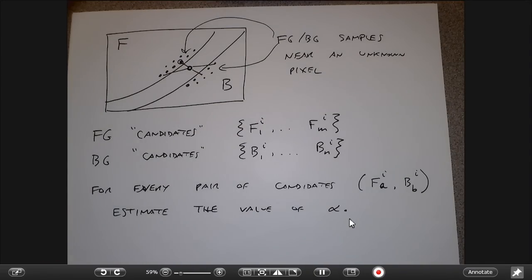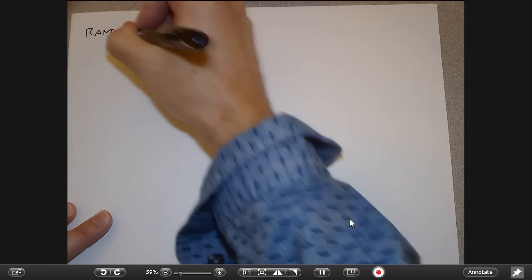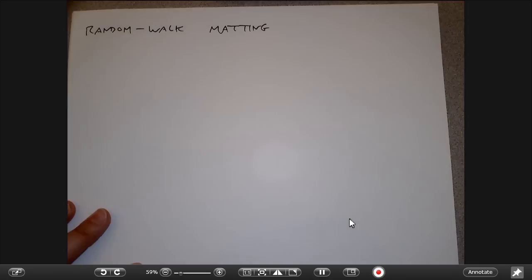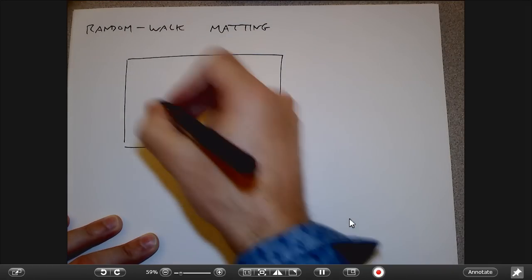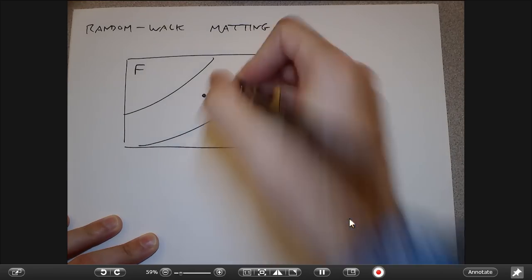The second thing I want to talk about is a slightly different way of looking at the matting problem — it's also an interesting concept called random walk matting. Again, this is a nice intuitive algorithm, and it's also useful from the perspective of other computer vision algorithms that use a similar approach.